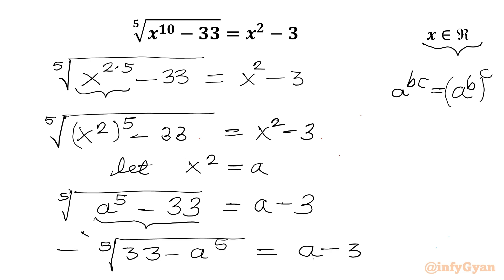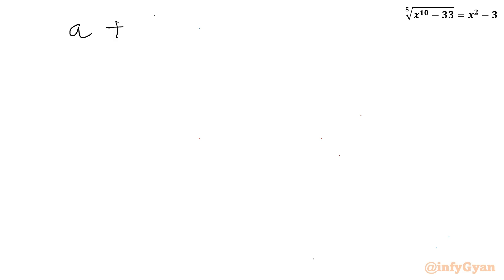Because of this odd power, I will move the 5th root term to the right-hand side and minus 3 to the left-hand side. So our equation becomes: a plus 5th root of (33 minus a to the power 5) equal to 3.